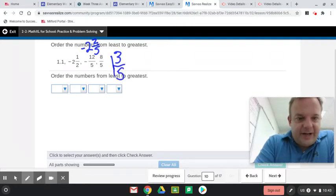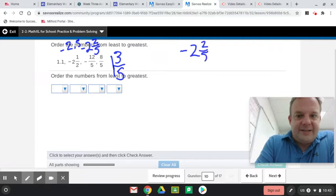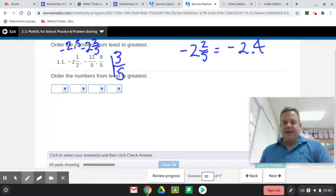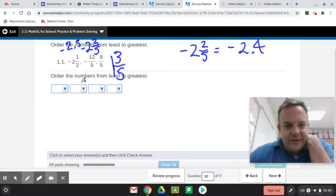And this one here, negative 2 and 1 half, compared with negative 2. So this is negative 2 and 1 half is negative 2.5, and negative 2 and 2-fifths is equal to negative 2.4. Just like that.